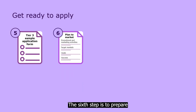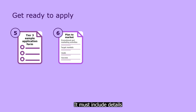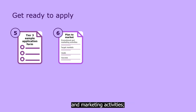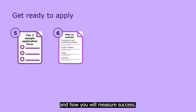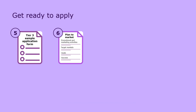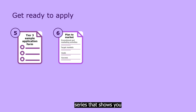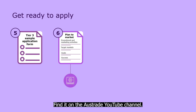The sixth step is to prepare your unique, high-quality plan to market. It must include details such as your planned promotional and marketing activities, your target markets, your goals and how you will measure success. There's another video in this series that shows you how to prepare a high-quality plan to market — find it on the Austrade YouTube channel.